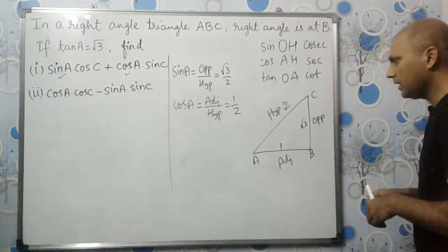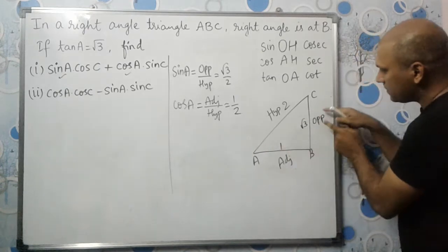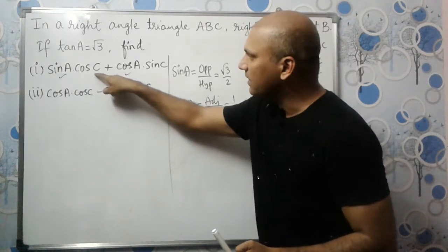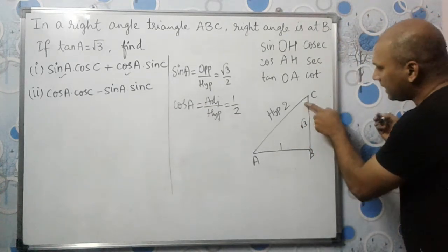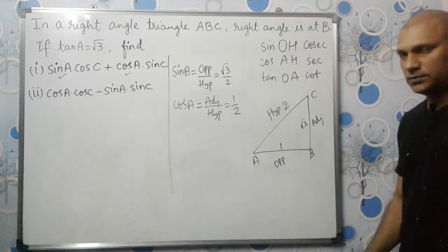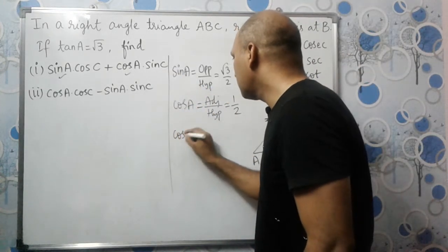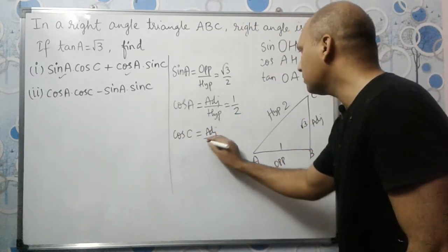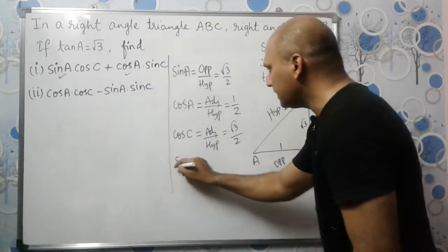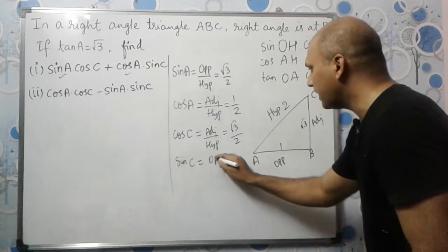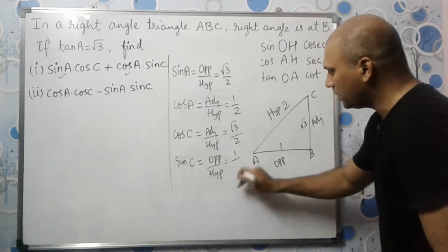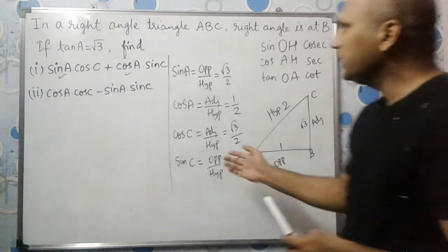Now we need cos C and sin C. For angle C, the opposite side is AB equals 1, and the adjacent side is BC equals root 3. So cos C equals adjacent over hypotenuse equals root 3 over 2. Sin C equals opposite over hypotenuse equals 1 over 2.